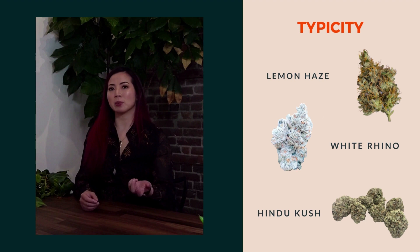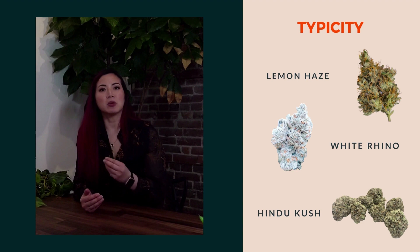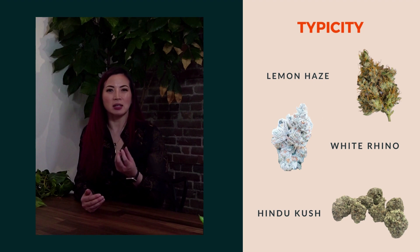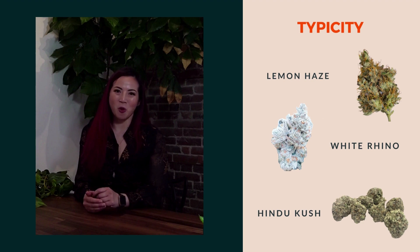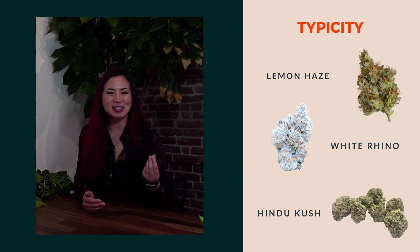Depending on the genetic lineage of the cannabis plant, it will express in different ways. For example, a haze that will grow tall won't necessarily have the highest potency, but it will produce high terpenes and an aroma that is sweet and citrus — and that makes good quality cannabis. Another example would be a kush. If you saw a kush that had low potency and tasted like dry grass, that's not typical of a kush. We're looking for high potency and dense bud and a really skunky, piney, gassy type of aroma. That is an example of what typicity is.